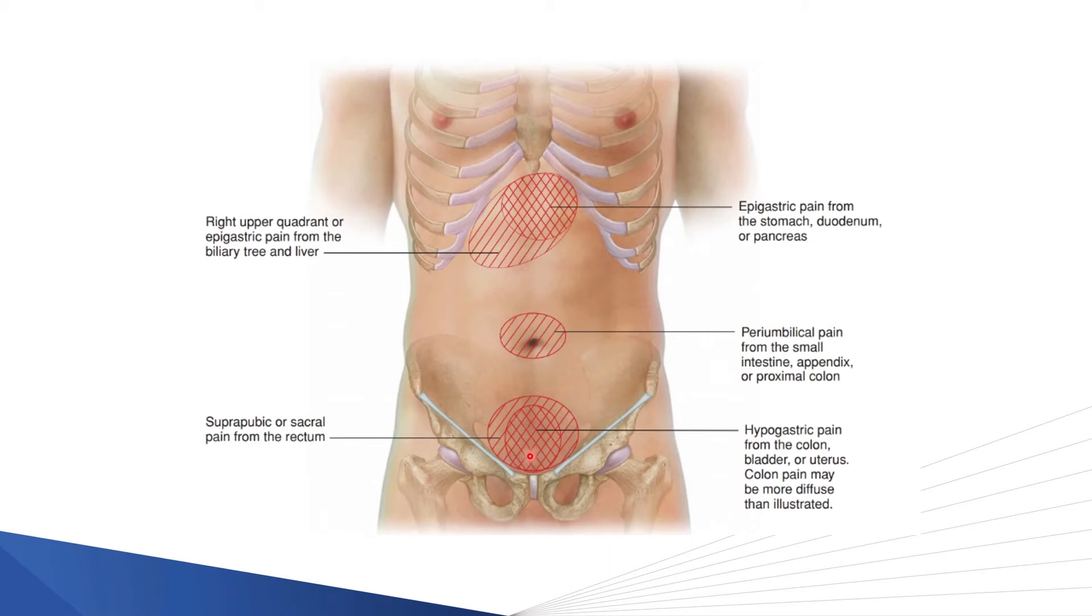Patients may also complain of suprapubic or sacral pain typically presenting in the suprapubic region. You can get pain from the colon, bladder, or uterus here. Colon pain can be more diffuse and can sometimes present in the patient's lower back. Because visceral pain is poorly localized and the areas associated with it are quite large and in the midline, it's very difficult to establish which organ the pain is arising from.